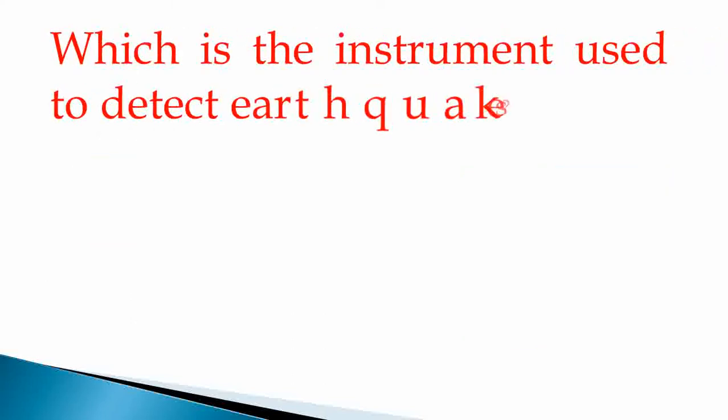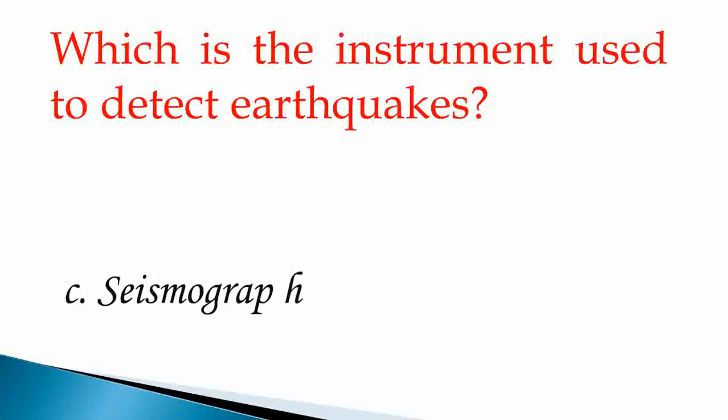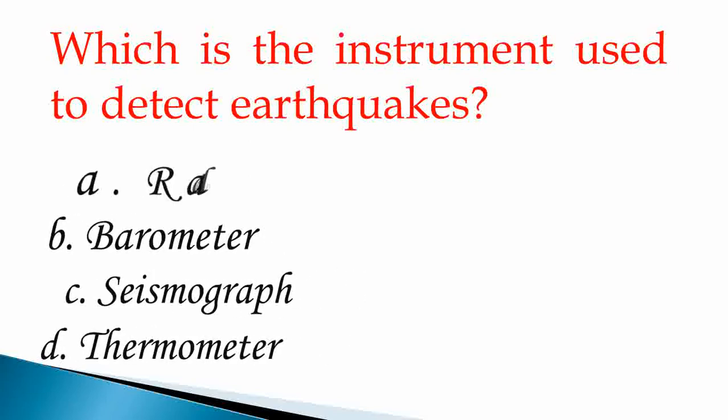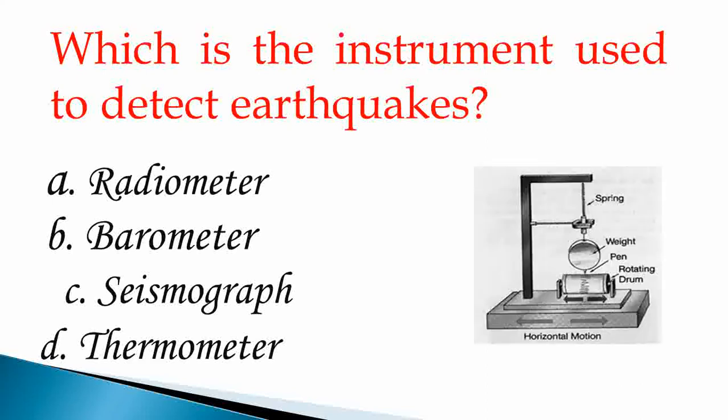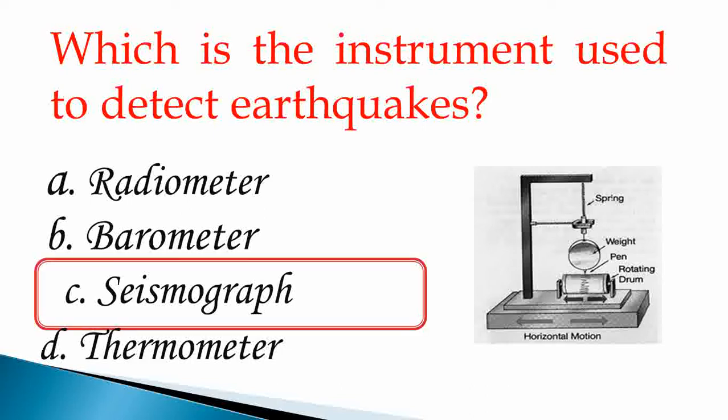Which is the instrument used to detect earthquakes? Option A: Radiometer. Option B: Barometer. Option C: Seismograph. Option D: Thermometer. Our answer is Option C, Seismograph is the instrument used to detect earthquakes.